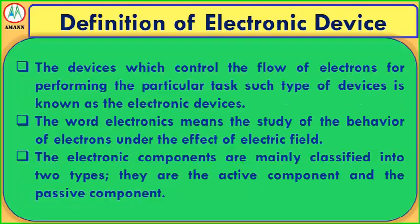The definition of electronic devices: devices which control the flow of electrons for performing a particular task are known as electronic devices. The word electronics means the study of the behavior of electrons under the effect of an electric field. Electronic components are mainly classified into two types: active components and passive components.